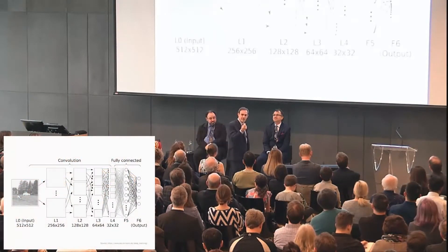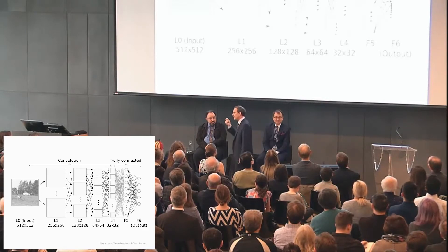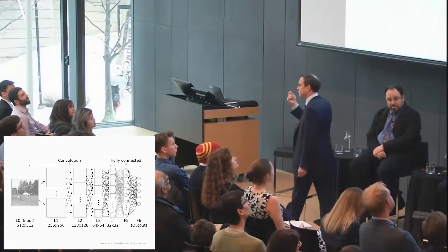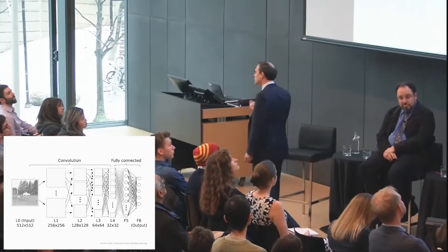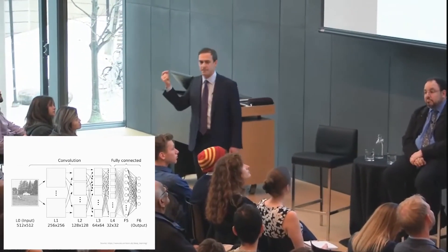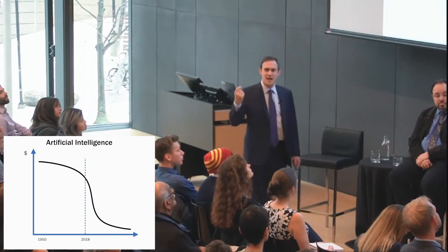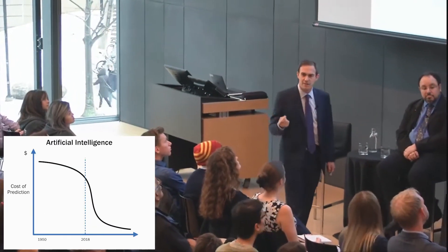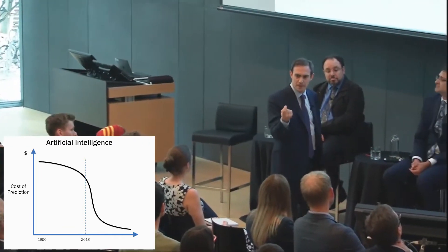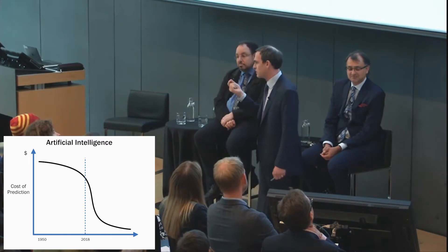And that gets us to this. This is the convolutional neural net, or at least a representation of it. This is the technology underlying a prediction machine — the technology underlying the current excitement around AI. And so we should think about this as a drop in the cost of prediction. It's a prediction tool. How do we understand the implications of a drop in the cost of prediction?